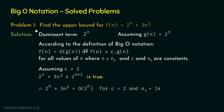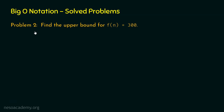Let's proceed and solve problem number 2. Problem number 2 is: find the upper bound for F(n) equal to 300. Pause this video and try to solve this problem on your own. Step number 1 is to identify the dominant term in F(n). F(n) is equal to 300. In this expression, we have only one value which is 300. Therefore, the dominant term is 300.